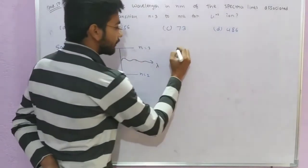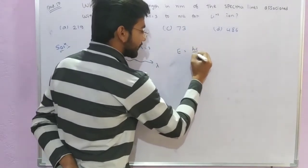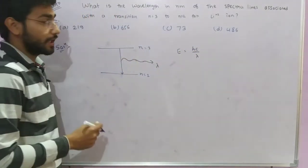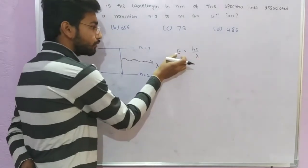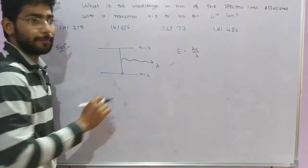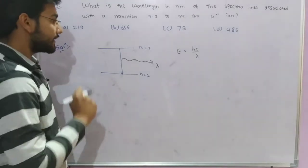The radiation it emits, we need to calculate its wavelength. The simple formula for wavelength calculation is: Energy equals hc upon lambda. If we want to calculate lambda, first we need to calculate the energy of this radiation.